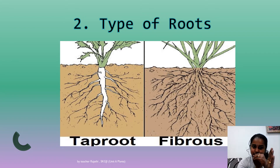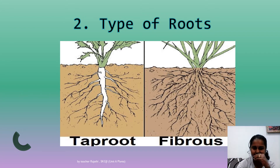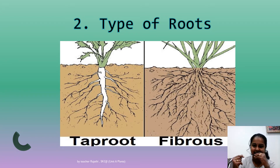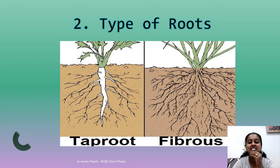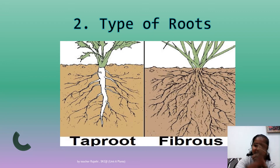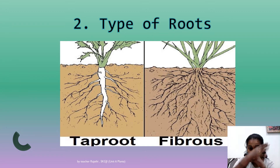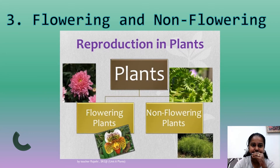Next is the type of roots. This side is a taproot — it is very long and sharp, like a carrot. And this side is a fibrous root — it is messy like your hair. There are two types of roots: taproot and fibrous root.